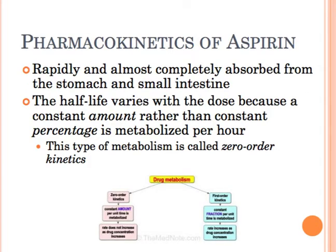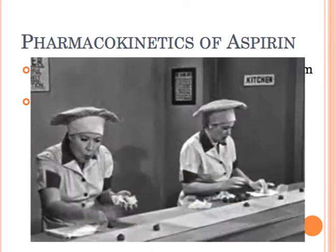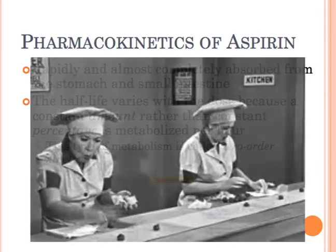Aspirin is rapidly and almost completely absorbed from the stomach and the small intestine, and is widely distributed into most bodily tissues. Aspirin is known to displace a number of drugs from protein binding sites in the blood. Its half-life for a small dose is about two to three hours, but at higher doses the half-life can be as long as 15 to 30 hours, as aspirin has zero-order kinetics at higher doses — only a constant amount can be metabolized per hour.